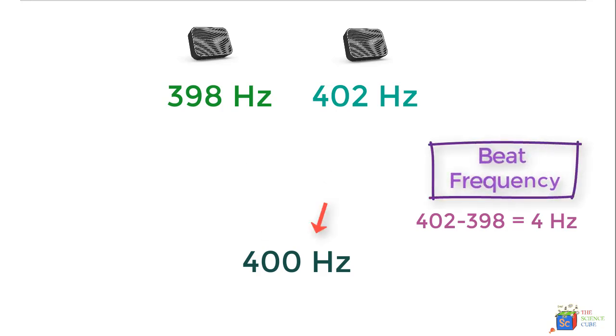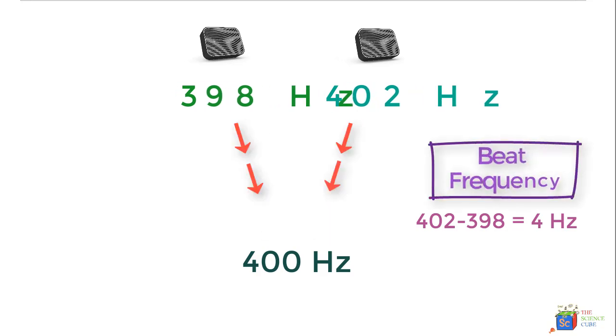Let us analyze the whole thing mathematically. Consider two different waves, and the equations we take for these two waves are time dependent. Let us say your first wave is S1 = Sm cos(ω1t), and your second equation is S2 = Sm cos(ω2t).